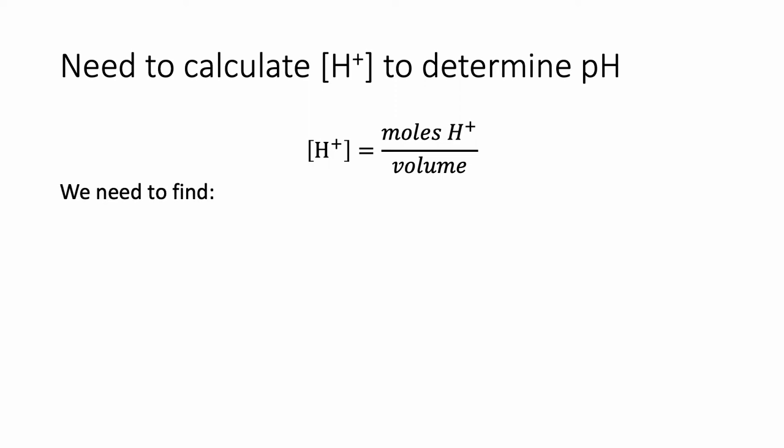In order to calculate our H+ concentration, we need to think about two different factors. First, how many moles of H+ do we have present in solution? And two, what is the volume of our solution? Both of these factors are going to change over the course of the titration, and that's why we need to think carefully about both of them.